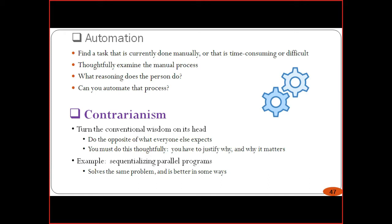What reasoning does a person do, and can you automate that process? If you have large amounts of data over a long period of time, you can go for simulation — simulation software definitely helps. Then, go for contrarianism — the conventional wisdom turned on its head. Do the opposite of what everyone else expects.